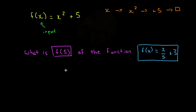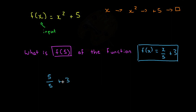So if a question asked: what is f(5) of the function f(x) = x/5 + 3? Again, all we have to do is take the input, 5, and then put it inside the function. So replace x with 5 — we have 5 over 5 plus 3. So 5 over 5 is 1, plus 3 is equal to 4. So our answer is 4.